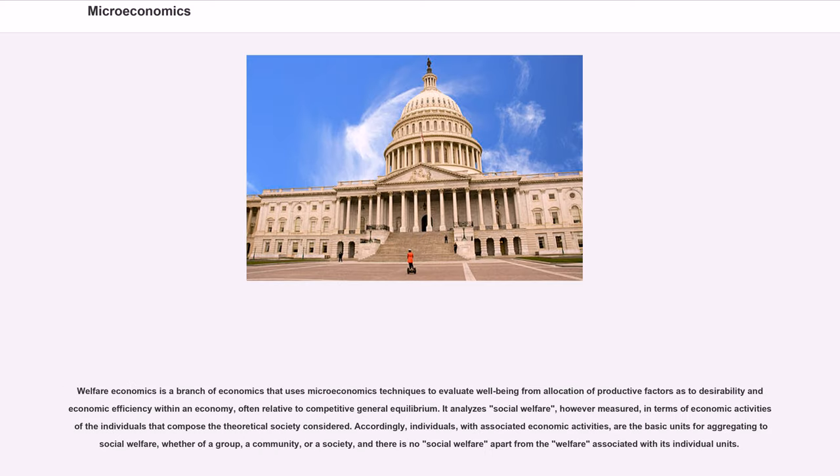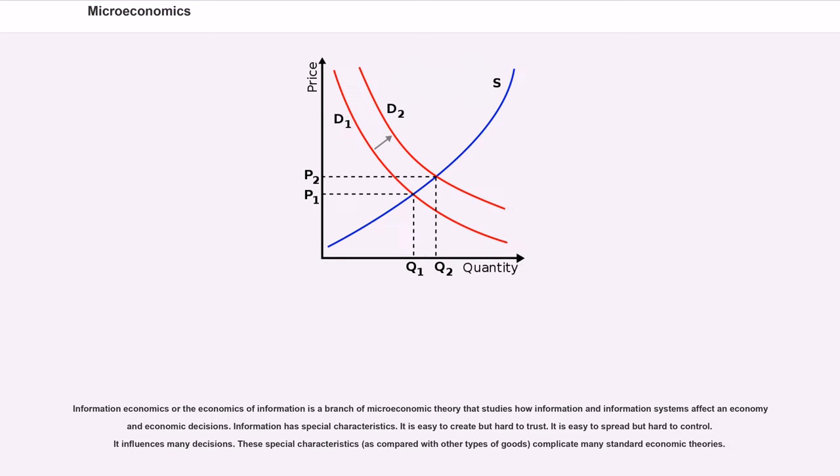In economics, welfare economics is a branch of economics that uses microeconomics techniques to evaluate well-being from allocation of productive factors as to desirability and economic efficiency within an economy, often relative to competitive general equilibrium. It analyzes social welfare, however measured, in terms of economic activities of the individuals that compose the theoretical society considered. Accordingly, individuals, with associated economic activities, are the basic units for aggregating to social welfare, whether of a group, a community, or a society, and there is no social welfare apart from the welfare associated with its individual units.